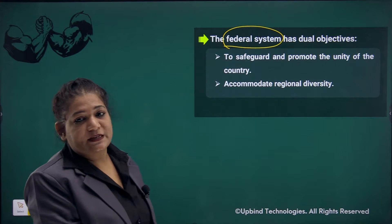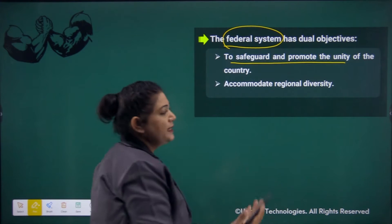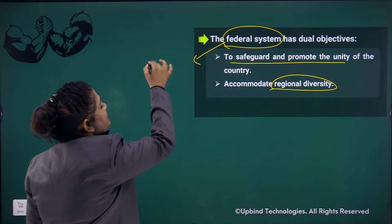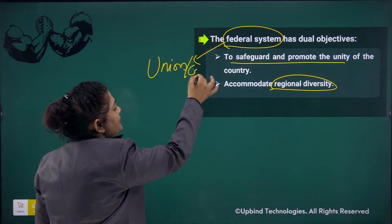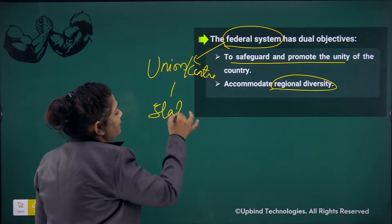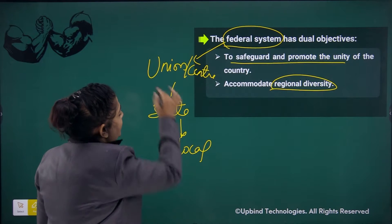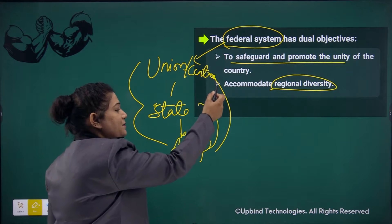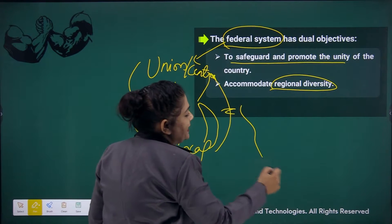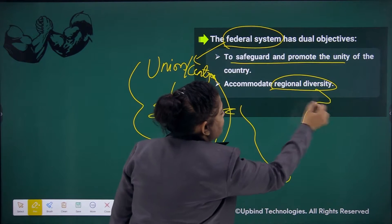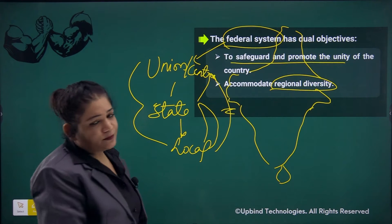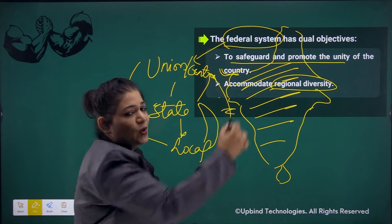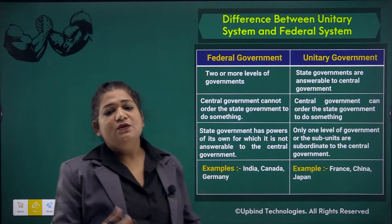The federal system has two objectives: it promotes unity in the country, and it specifies our regional diversity. As we have understood earlier, the federal system means there is a distribution of power between the union (or center), the state, and local bodies. This promotes unity in our country, and at the same time, India's map is diversified in so many ways — this reflects our regional diversity.